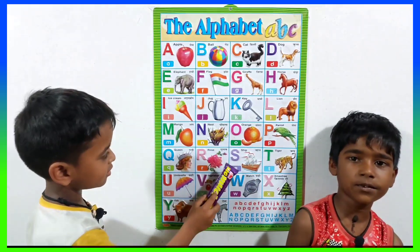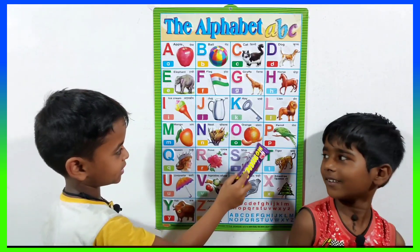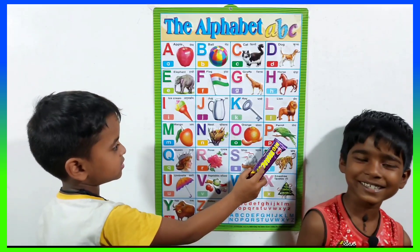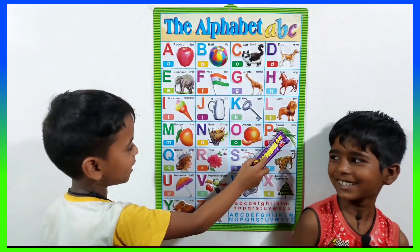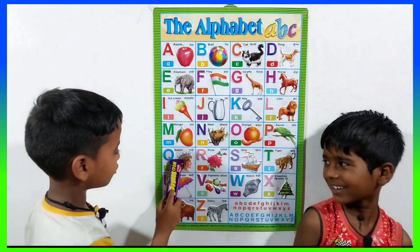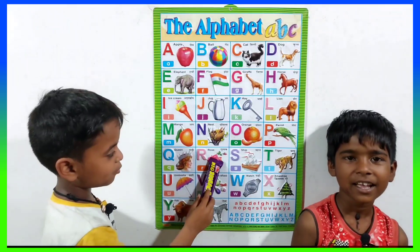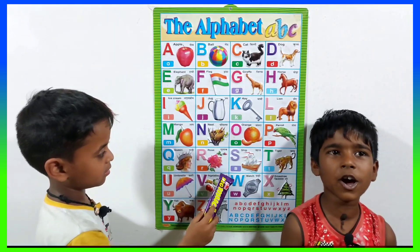N for nest. O for orange. P for parrot. Q for queen. R for rose.